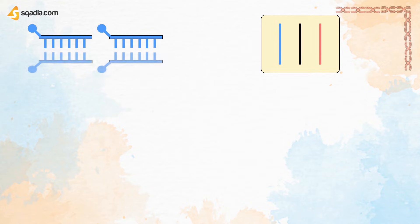A graph is plotted with three lines — a central line, a blue line indicating the normal genome, and a red line indicating the diseased genome. Suppose both genes were normal, having no disease, meaning no deletion and duplication. The ratio will be one-to-one, indicated by the central line showing 1:1.